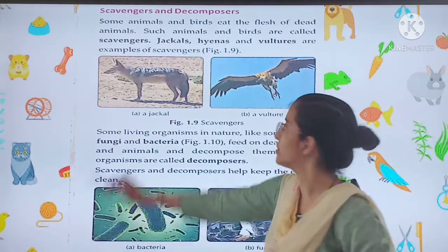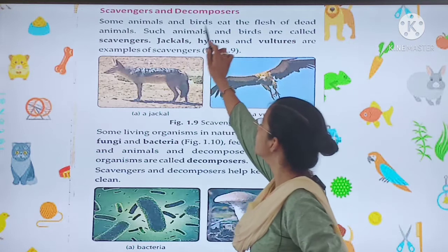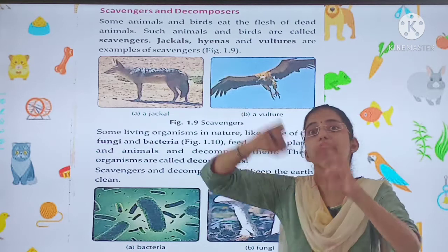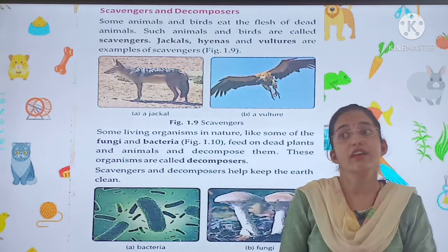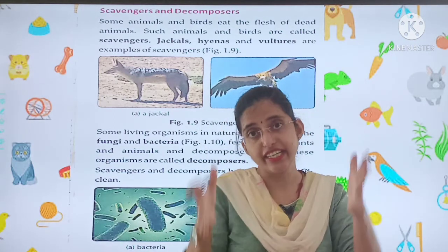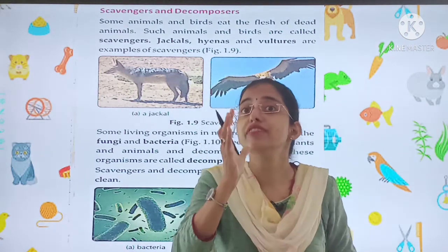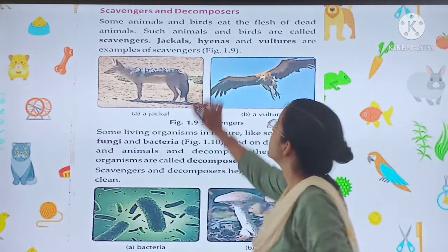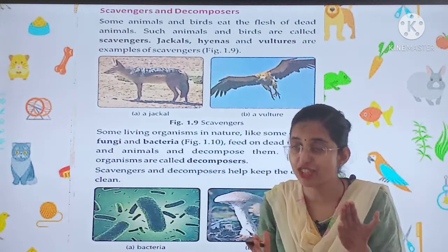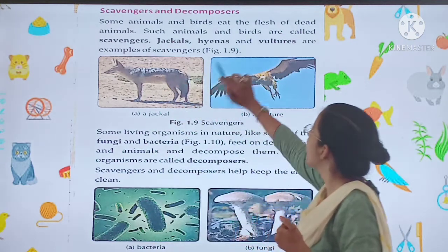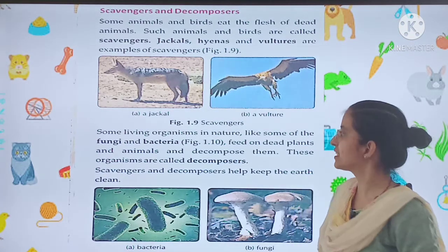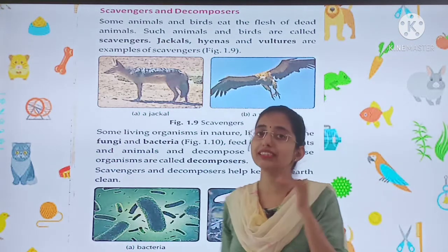Come, children, read with me. Some animals and birds eat the flesh of dead animals. There are some animals and birds which specifically eat the flesh of dead animals. Such animals and birds are called scavengers. Jackals, hyenas, and vultures are examples of scavengers.